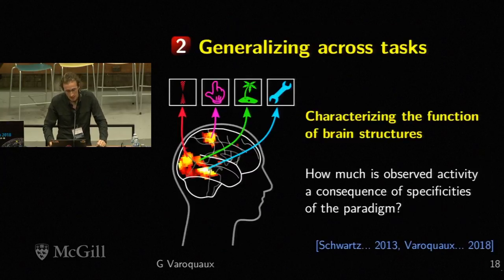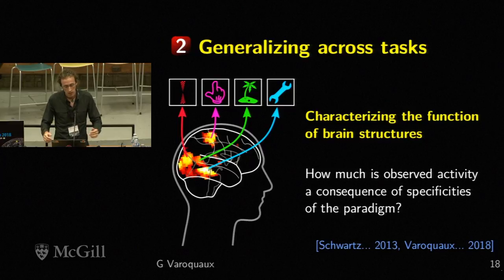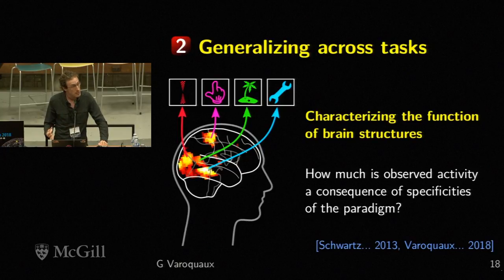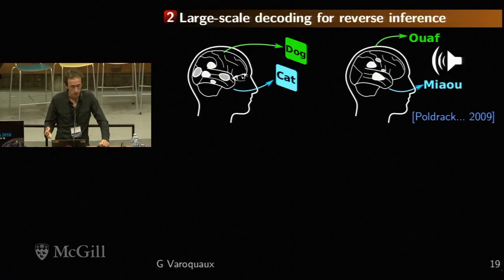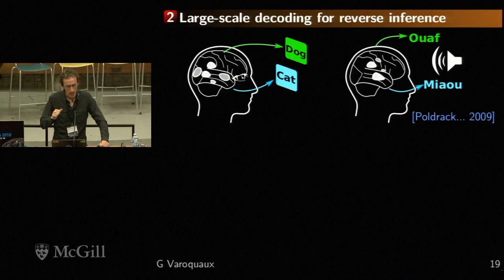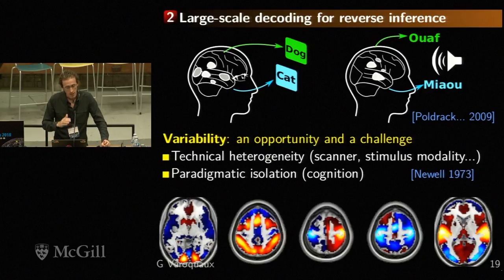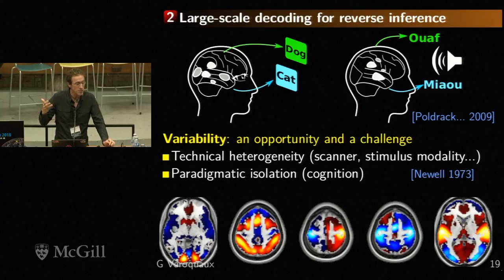This work shows we can go beyond opposition — we can recover the full hierarchy of visual modules and generalize across different paradigms. Working on natural image datasets, we can reproduce classical results done with extremely non-natural stimuli, which I personally find exciting. The next question is: can we generalize to arbitrary paradigms across tasks? This is useful to characterize the function of brain structures — how much observed activity is a consequence of the specificities of the paradigm. Paradigms studying similar mental processes may differ greatly — for instance, using visual versus auditory stimuli.